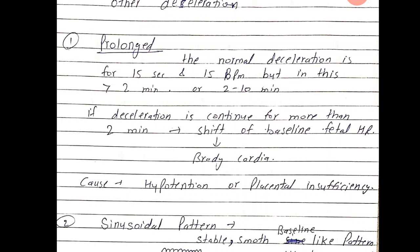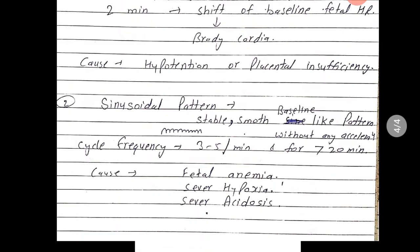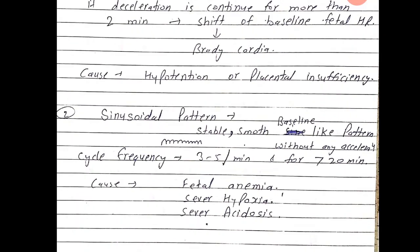The cause of prolonged deceleration includes hypotension and placental insufficiency. Second is sinusoidal pattern: it has a stable, smooth, sine wave-like baseline pattern. The cycle frequency is 3 to 5 per minute, meaning 3 to 5 cycles per minute for more than 20 minutes, with no accelerations seen. The cause is fetal anemia, severe hypoxia, and severe acidosis.